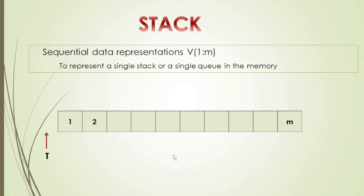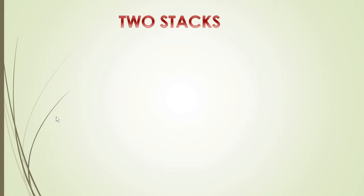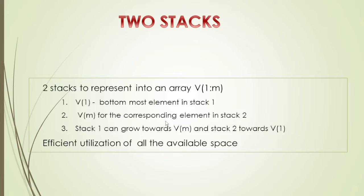The stack diagram is shown in the description URL. In the same memory location, we want to represent 2 stacks. Why? If we have only one stack, it may be underused or overused. That is why we represent V of 1 to M — that is M memory locations — as shared memory for 2 stacks.